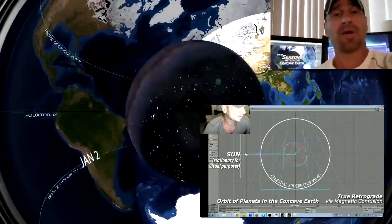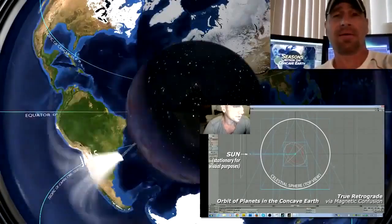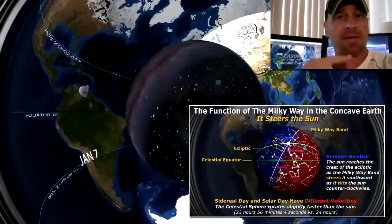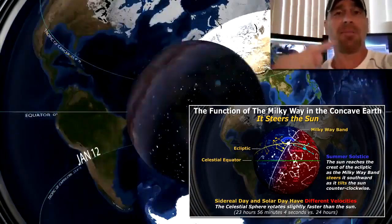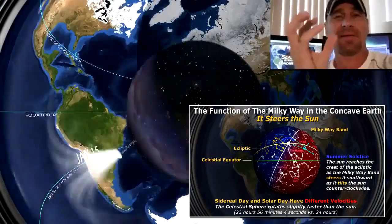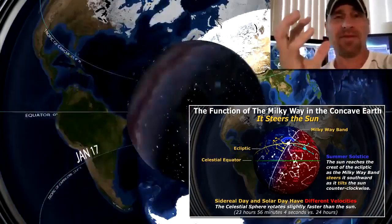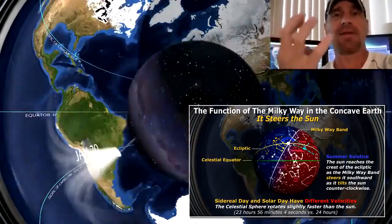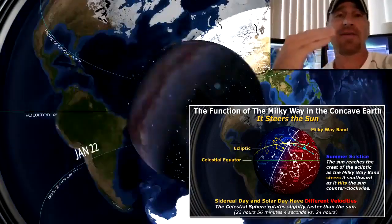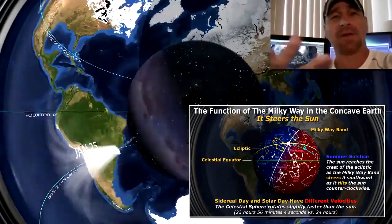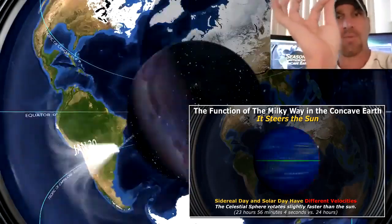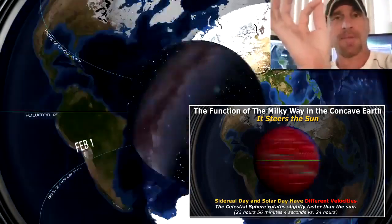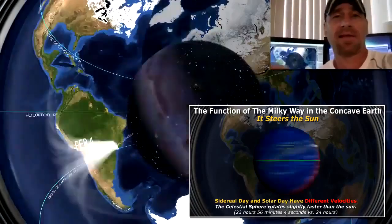The Milky Way band—it's a band, it's not a spiral galaxy—it's actually a literal band that separates the celestial sphere into two different hemispheres, two different magnetically influenced hemispheres that actually steer the Sun. So the Milky Way band has a function. When the Sun crosses that galactic plane every six months, it's also exhibited by the Ulysses satellite; they show that every six months the Sun is oscillating back and forth.